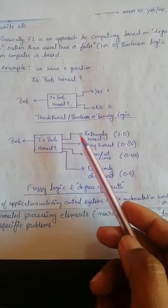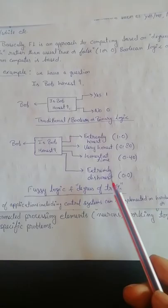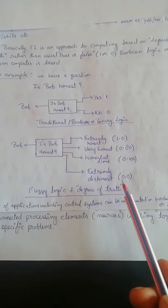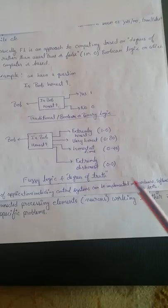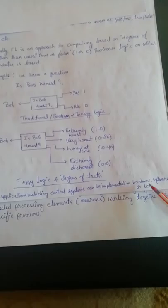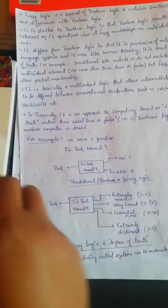In fuzzy logic, if Bob is extremely honest the value will be 1; if very honest the value will be 0.8; if honest at times the value will be 0.4; and if extremely dishonest the value will be 0. So there are many values between 1 and 0. Fuzzy logic depends on degrees of truth and has many applications including in control systems, applicable in both hardware and software.